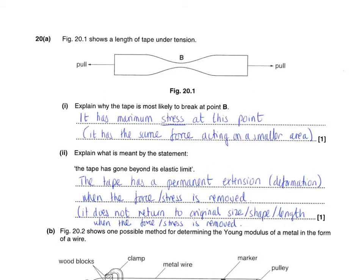So this is G481 homework book question 20. It starts off asking about this piece of tape that's being pulled and we're asked to explain why the tape's most likely to break at point B, at this point here.